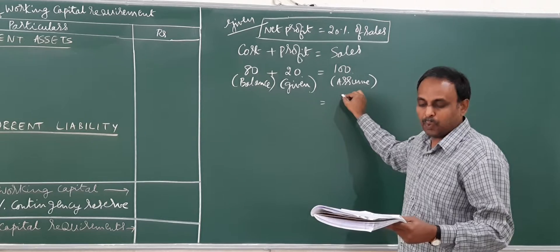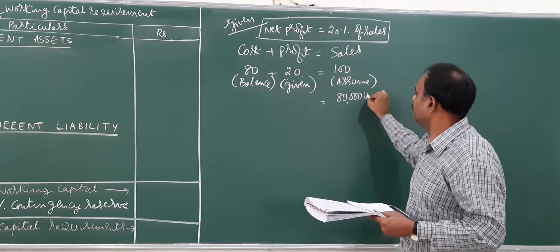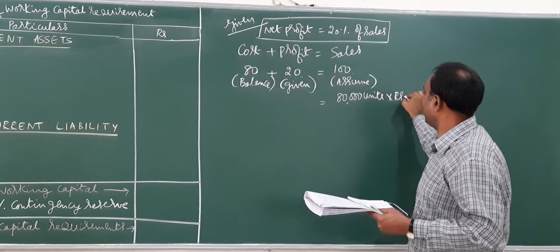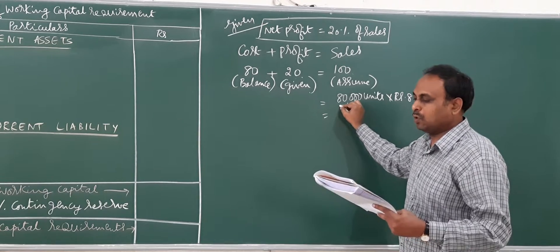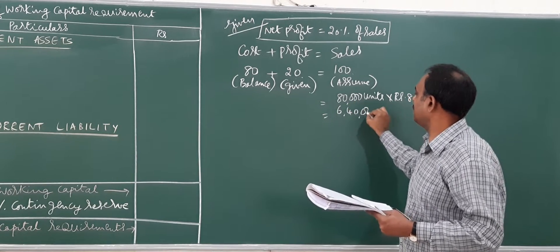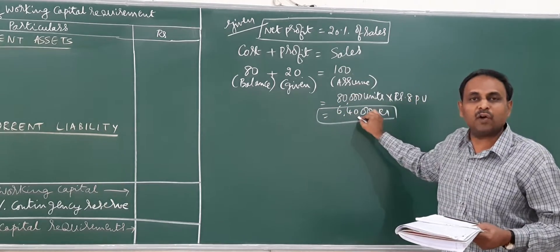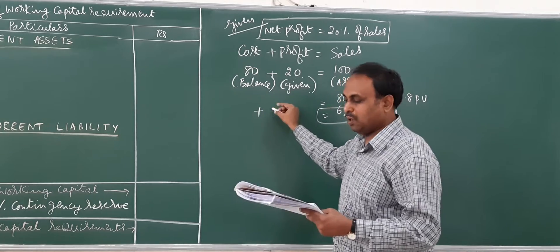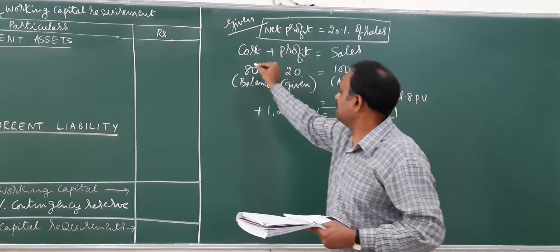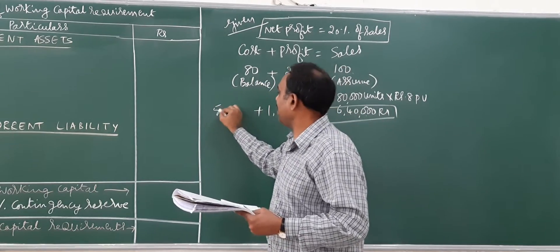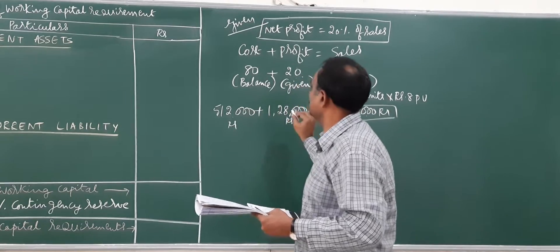To find the projected annual sales: eighty thousand units multiplied by selling price eight rupees per unit gives an amount of six lakh forty thousand rupees as sales. Twenty percent of six lakh forty thousand is one lakh twenty eight thousand as profit. Eighty percent of it will be five lakh twelve thousand as cost. This is the calculation we need to be ready with before working the problem.